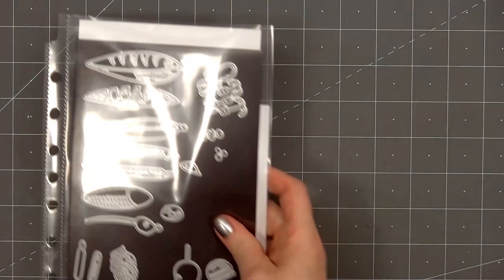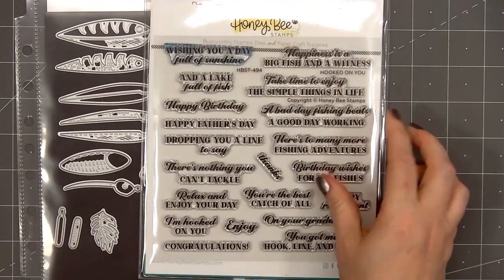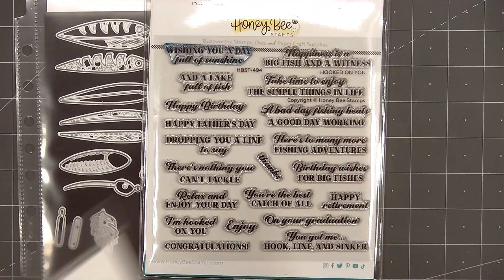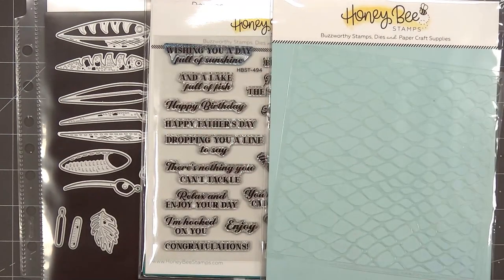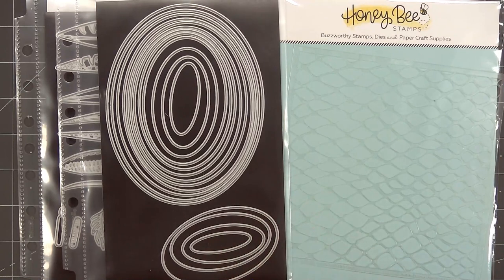Hello friends, it's Christy Marcotte. In today's video I'll be using Honey Bee Stamps Vintage Lures. They're hooked on used stamps and coordinating honeycut dies. I'll also be using their Fishnet Stencil and Sweet Stacks ovals.